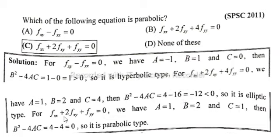Next, option C: f_xx plus 2f_xy plus f_yy equals 0. Here A equals 1, B equals 2, and C equals 1. So the discriminant formula is B² - 4AC. The value is B² equals 2² equals 4 minus 4 times A times C.